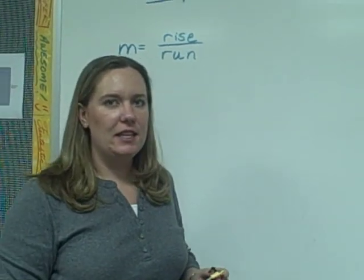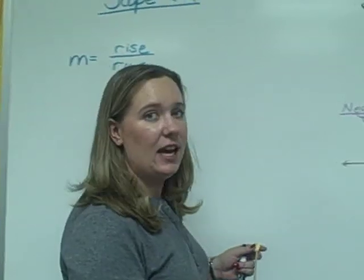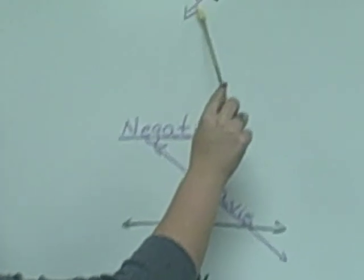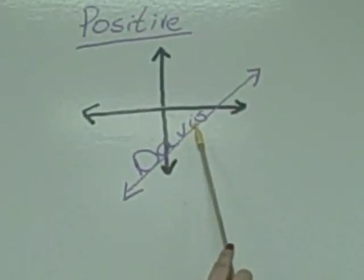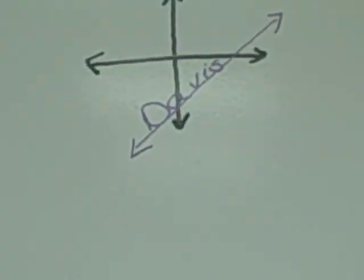Remember, positive lines are lines that are going uphill. You can test whether a line is going uphill by writing your name on the line. If your name is going uphill, the line has a positive slope.